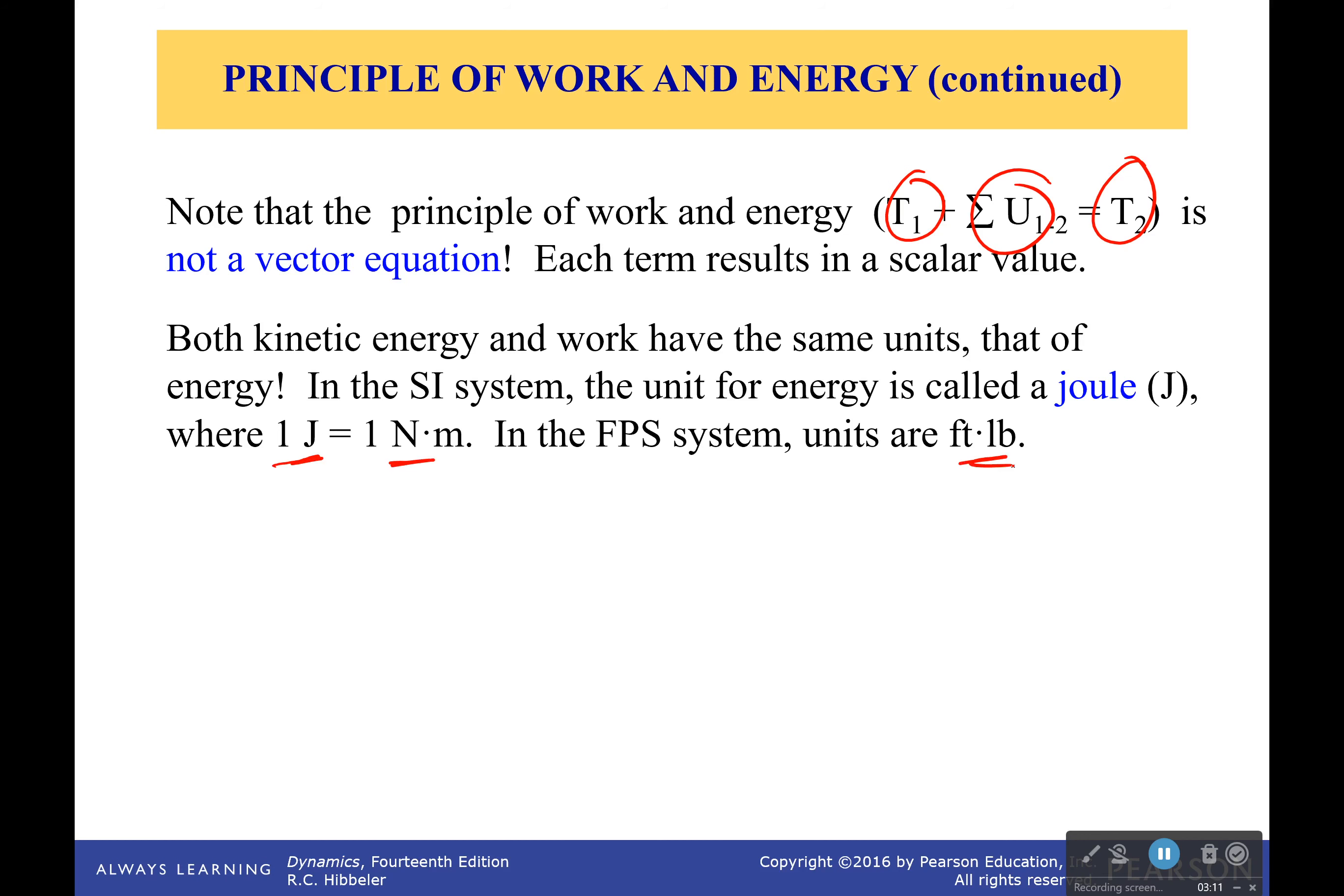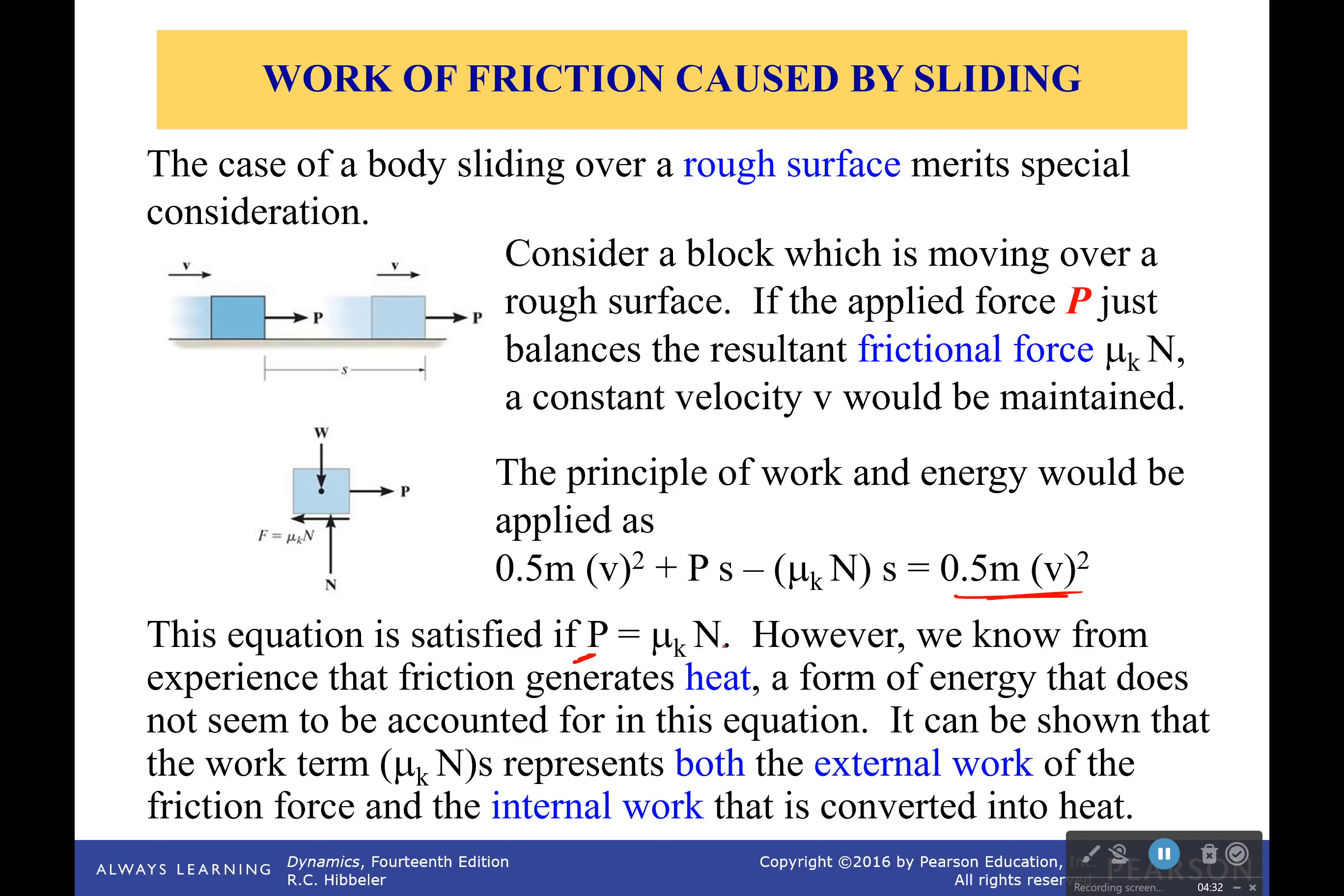And our initial and final velocities would be constant. Therefore, for this to work, we would see that our load we're applying would have to be equal to the normal force times our coefficient of kinetic friction, which means that we are applying work which is then just being dissipated by friction. Friction dissipates the energy. It dissipates the work you're doing.